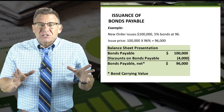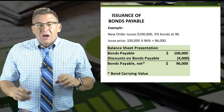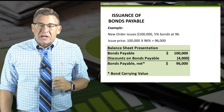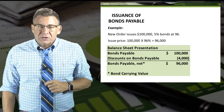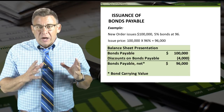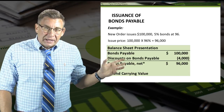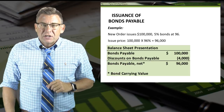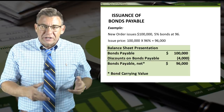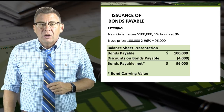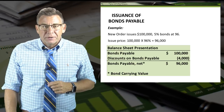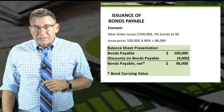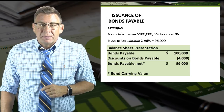Let's look at the balance sheet presentation of the bonds payable after issuance. Bonds payable is $100,000. Discount on bonds payable is shown as negative — but accounts don't have negative balances — so this just means it is reducing the carrying value of the bond. It also means that discounts have debit balances, and debit balances reduce liabilities.